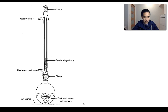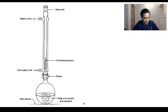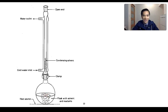The condenser itself is a piece of glassware that consists of a tube within a tube. Around the outside, we have water that can flow around the inside tube, which is actually open. It's important to have an open end so that you don't end up with a buildup of pressure. As our reactants and products are being heated, they're going to boil and form a vapor, and the water surrounding the inner tube is going to cool down and condense those vapors back into liquids. They flow back into our flask, and then the heating process can continue.